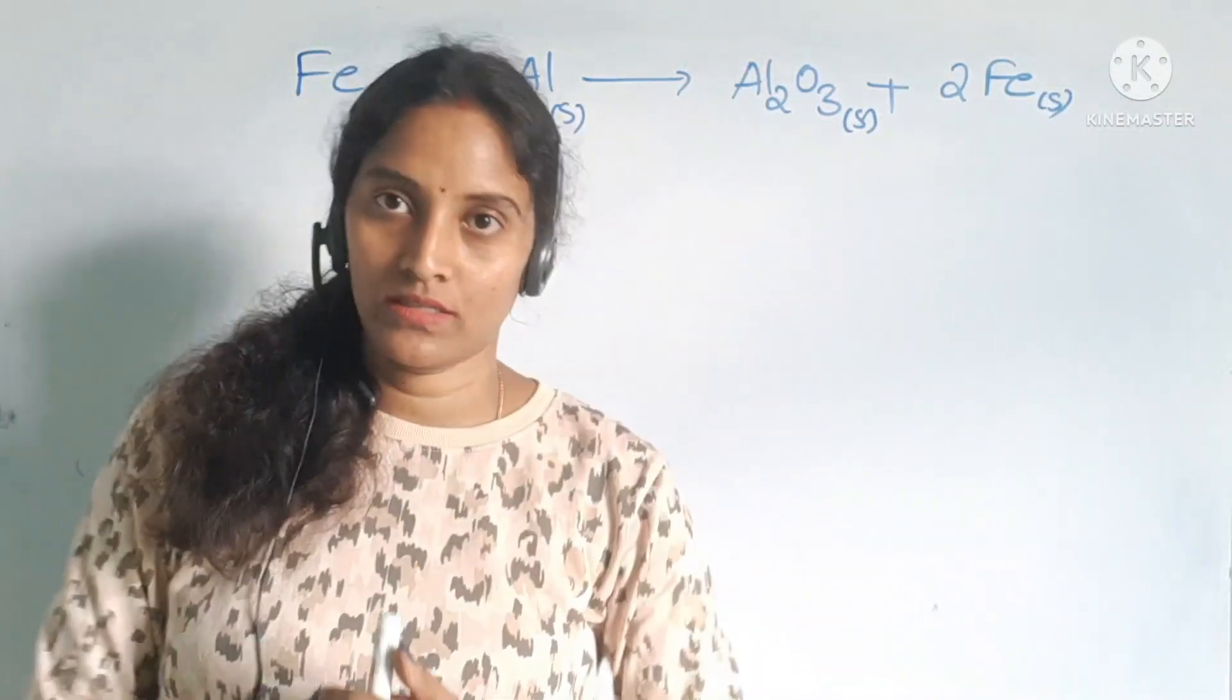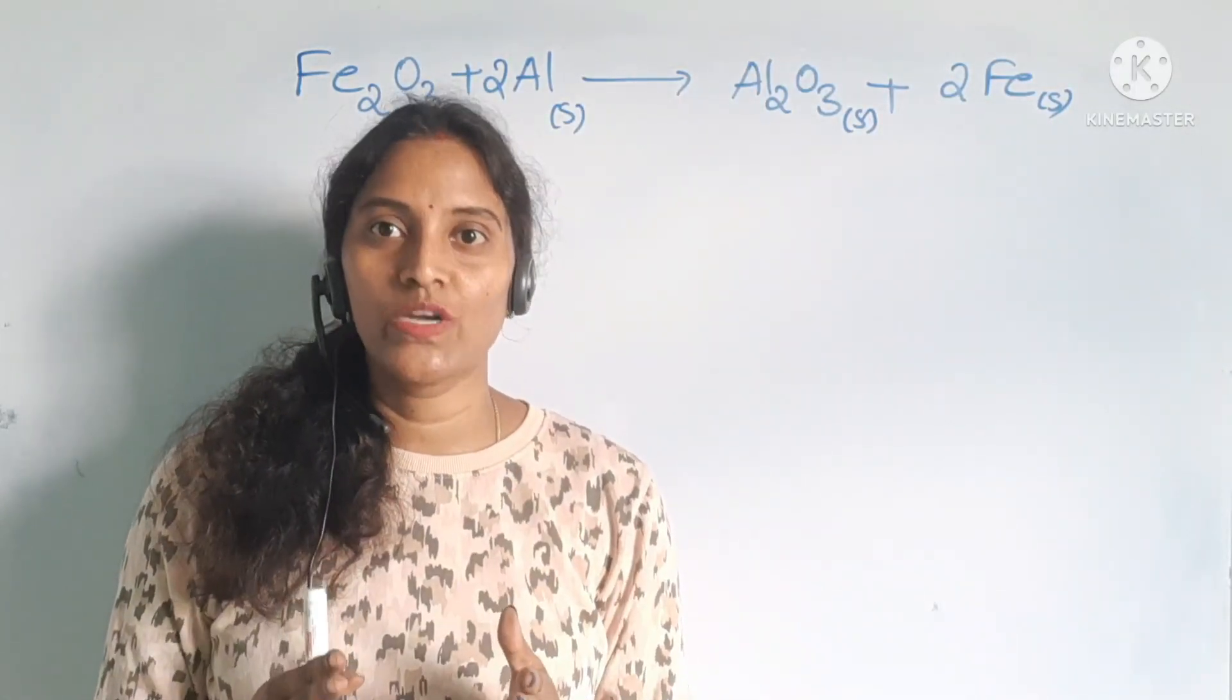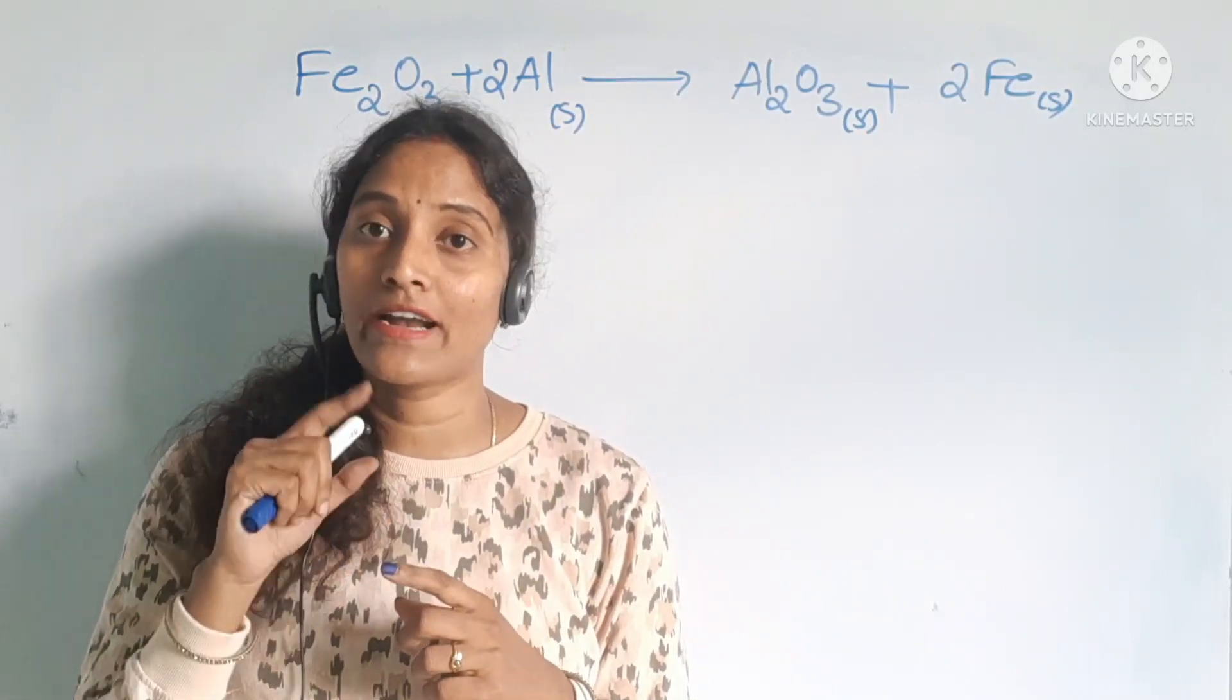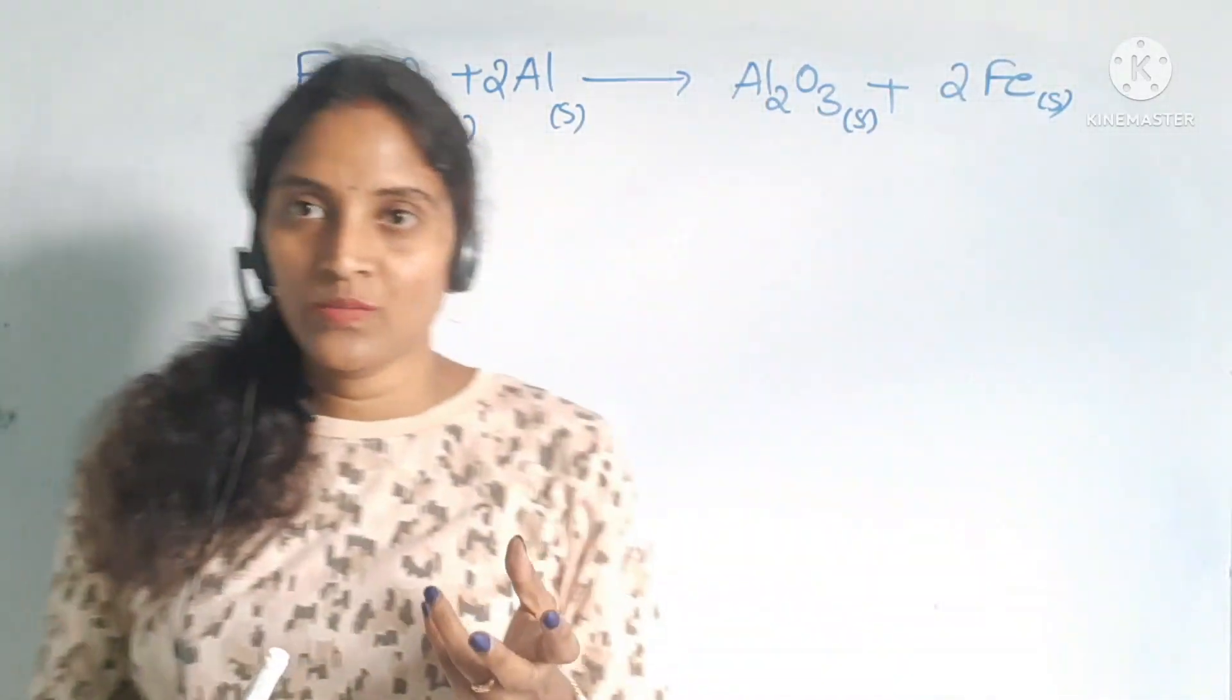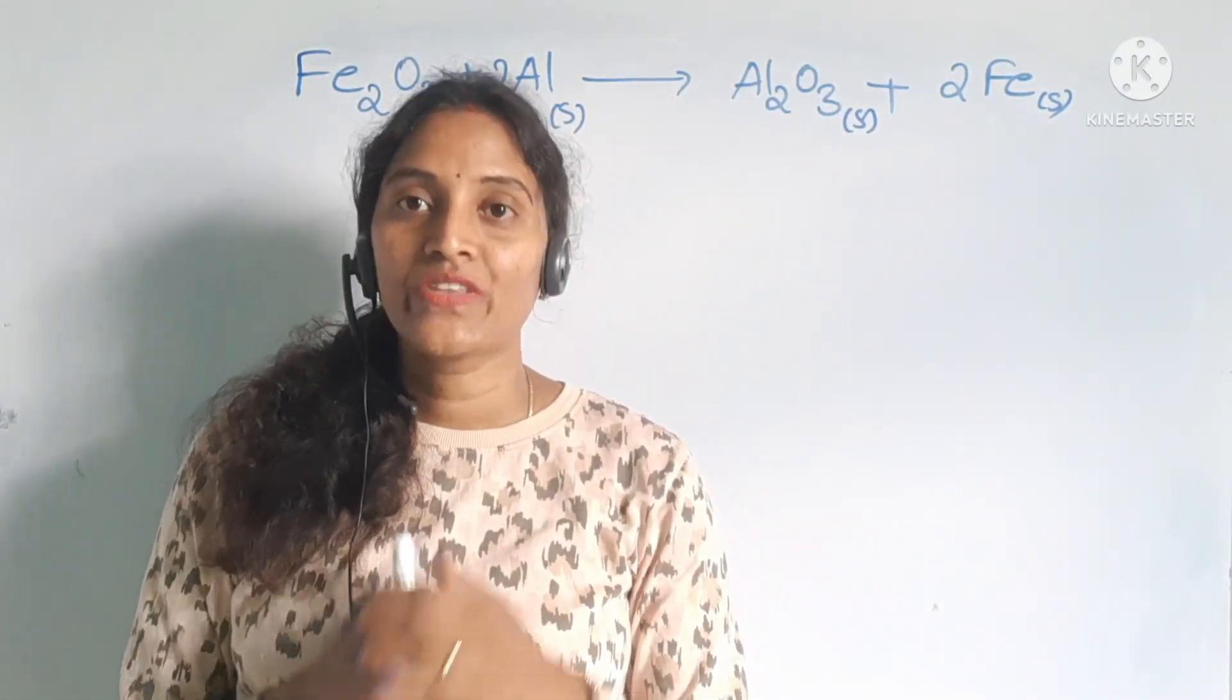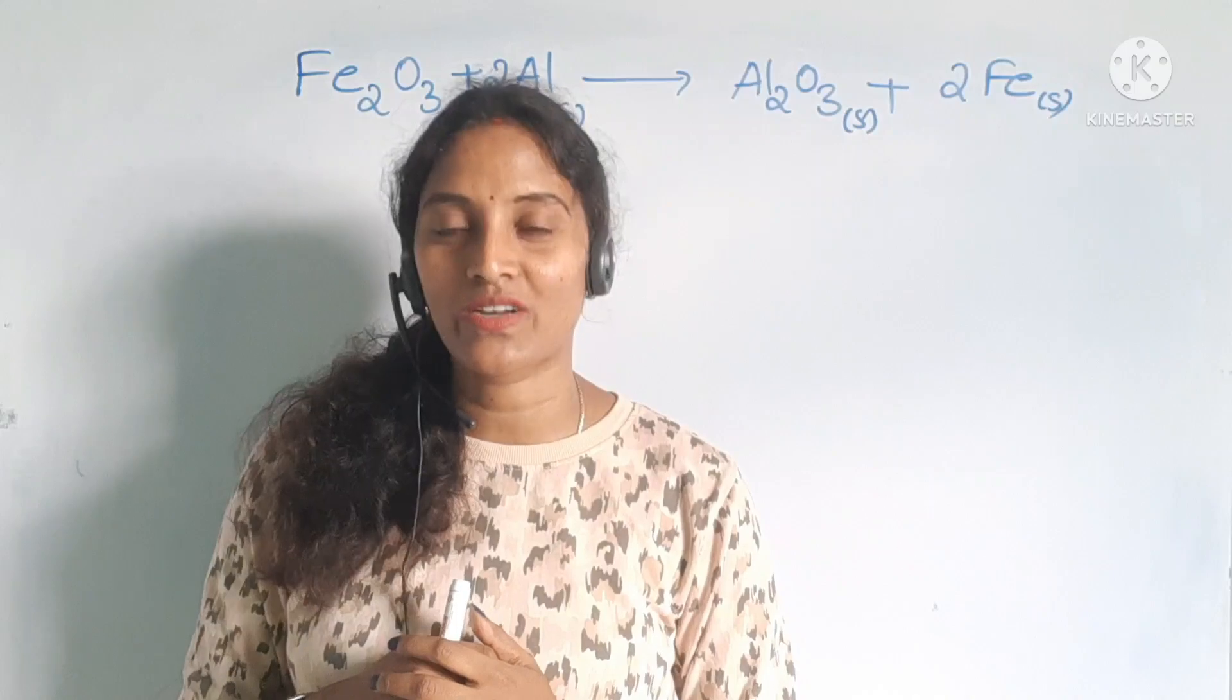Now coming to our points, our topic. Actually, the first point is: a balanced chemical equation gives information about reactants and products through their symbols and chemical formulas. Symbols are Fe, Al, O - these are the symbols for particular elements or atoms. And Al2O3 and Fe2O3, these are the chemical formulas for compounds.